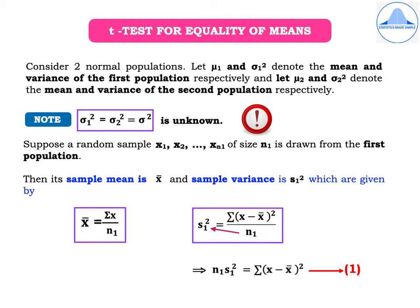Now suppose a random sample x1, x2, ..., xN1 of size N1 is drawn from the first population. Its sample mean is denoted by x̄ and the sample variance is s1², given by x̄ = Σx / N1 and s1² = Σ(x − x̄)² / N1. Cross-multiplying, we get N1·s1² = Σ(x − x̄)², which is denoted as equation 1.